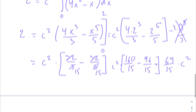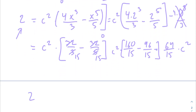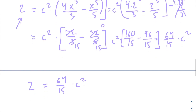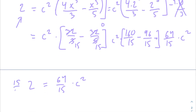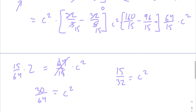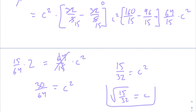So we have 2 equals 64/15 times c squared. Multiply both sides by 15/64, giving c squared equals 30/64, which simplifies to 15/32. Taking the square root of both sides, c equals the square root of 15/32. We have finally solved for c after all that work.